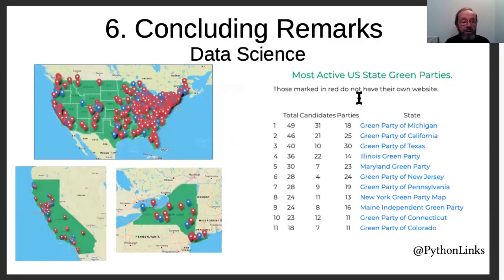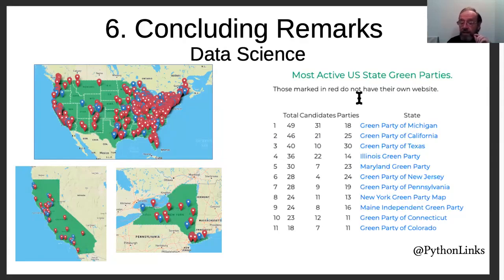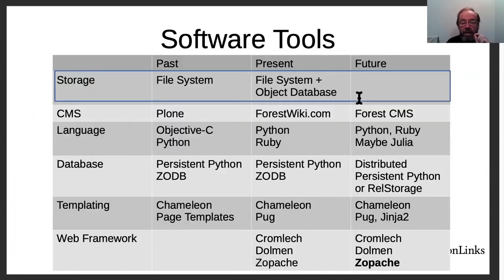Some concluding remarks. Before the map, the Green Party never really knew what the strongest states are. Now you can look at it — clearly there's a big gap in the middle of the country, what we call the red states. The state maps are very useful. My boss's boss, the co-chair of the Illinois Green Party, said until he used the maps he never really understood the state party. We also did some analysis of the most active state parties.